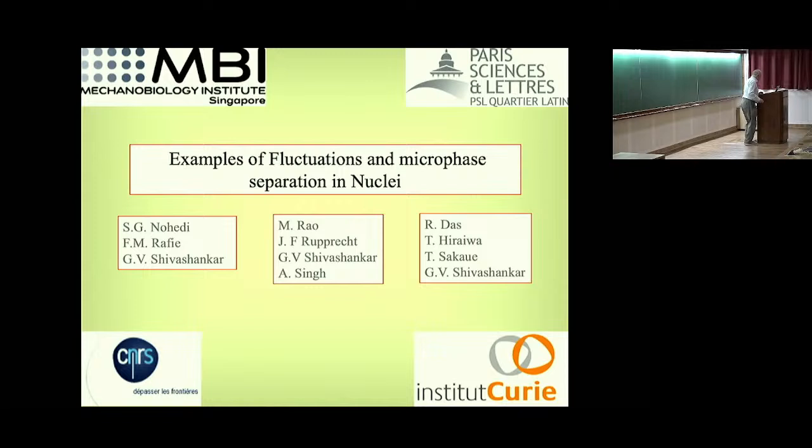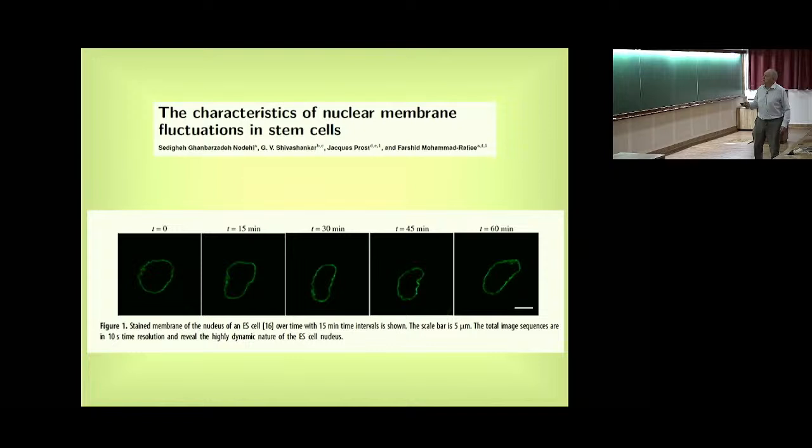So let's start with the first challenge of Shiva. And so the challenge is the following. You look at the embryonic stem cell under the microscope and you see over this one hour timescale, you see this huge shape change. And here is your five microns, so the size, the average size of the nucleus, about 10 microns, but you see that there are very strong fluctuations.